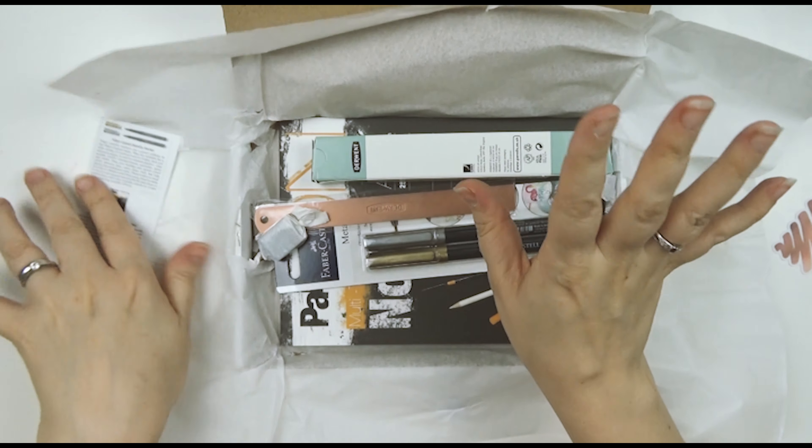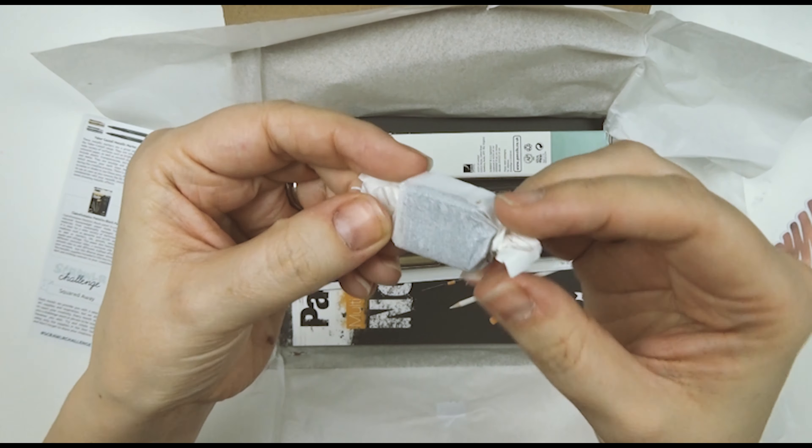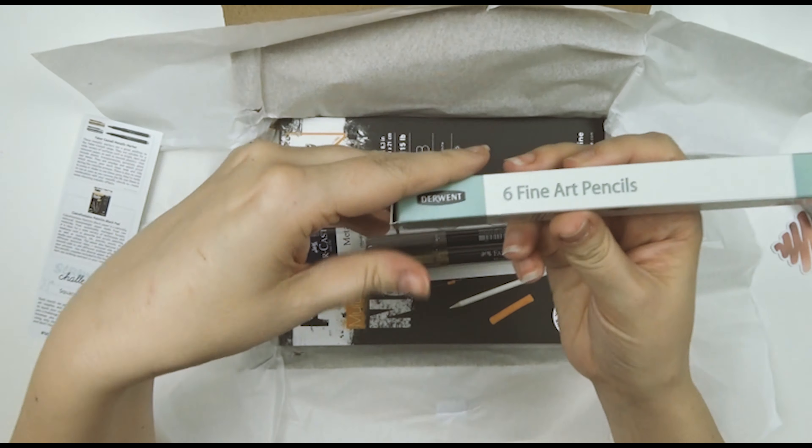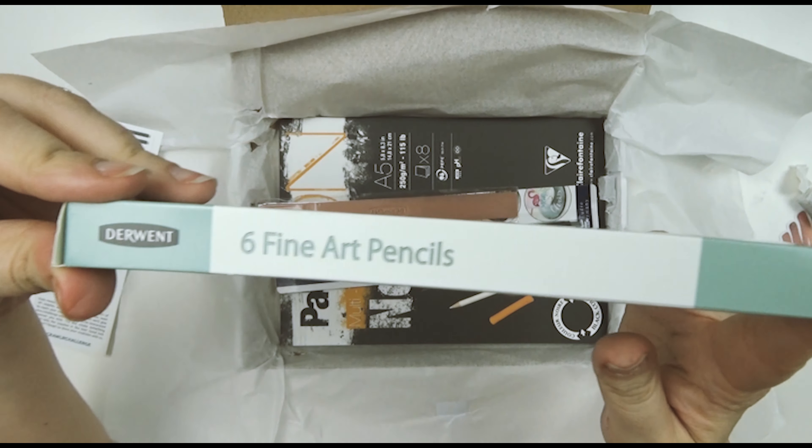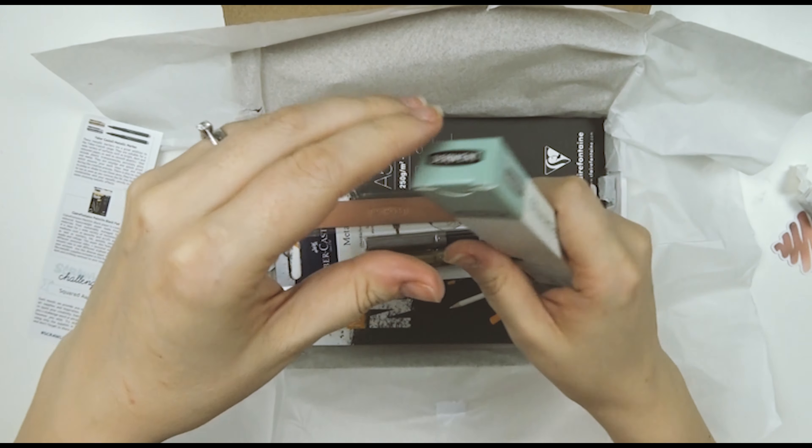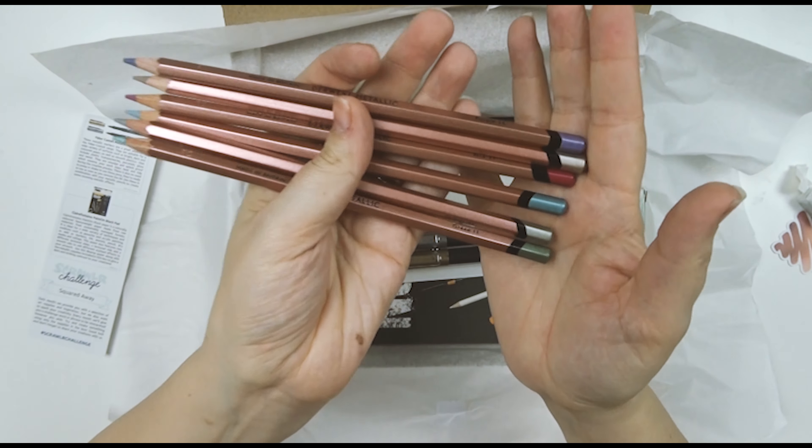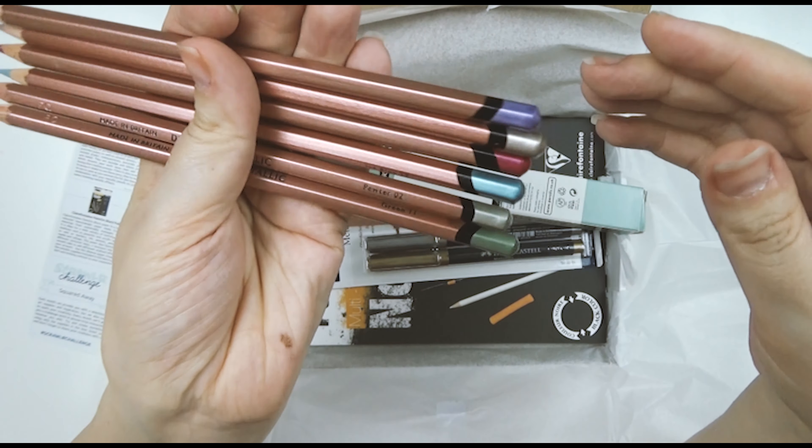And a menu of the art supplies, but I don't look. This is a suede of some kind. And six fine art pencils by Derwent. We've had a box like this before, but not with metallic ones in, so this could be interesting.